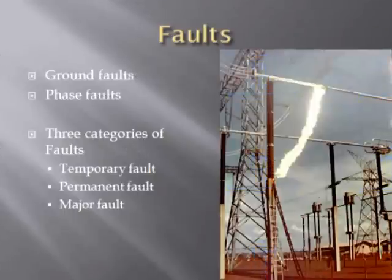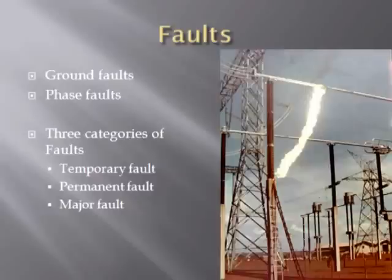What are faults? A path for the flow of current other than the load is called a fault. There are two types of faults: ground fault and phase fault. When the path is between line and ground, it is said to be a ground fault. When the fault is between two lines, it is called a phase fault. Faults can be categorized as temporary faults, permanent faults, and major faults depending on the magnitude and time taken to repair them.